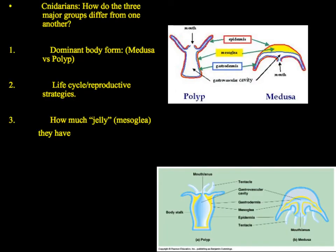We have three major groups of cnidarians: the hydrozoans, the scyphozoans, which are the true jellyfish, and the anthozoans, which are the corals and sea anemones. How we differentiate between those has to do with their dominant body form, whether they've got more medusa in their life cycle than polyp, their reproductive strategies, whether they even have both generations in their cycle, and how much mesoglia the medusa form has and how long it lives.